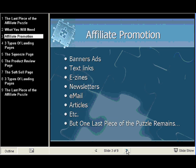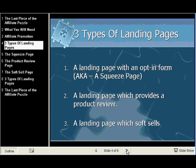What we're going to be talking about is building an affiliate landing page. There are really three types of landing pages: a landing page with an opt-in form, also known as a squeeze page — that's the one we're going to talk about today; a landing page which provides a product review; and a third type, which is a landing page that does a soft sell.